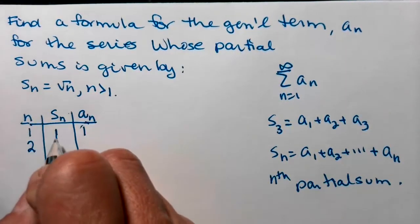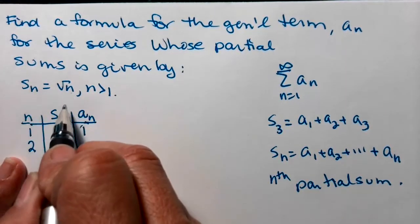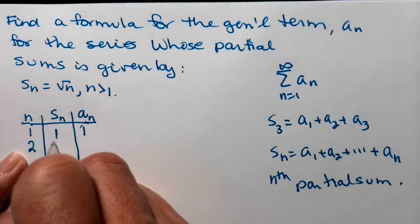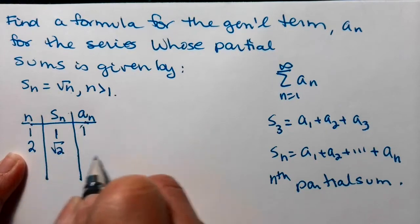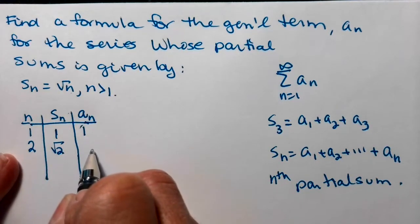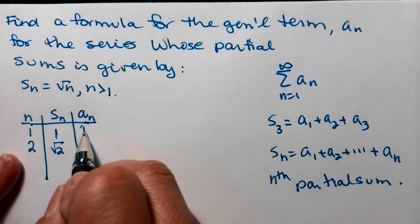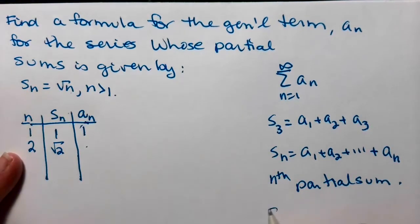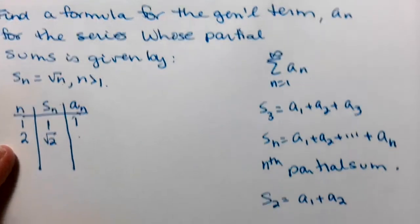So if n is 2, then my second partial sum would be the square root of 2. So what would the a sub n term have to be? So remember s sub 2 is equal to a sub 1 plus a sub 2.